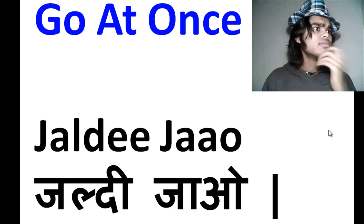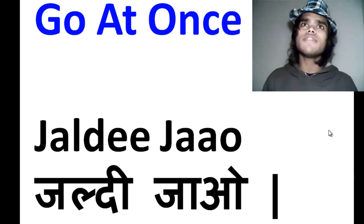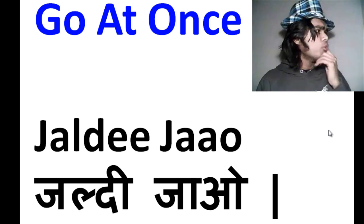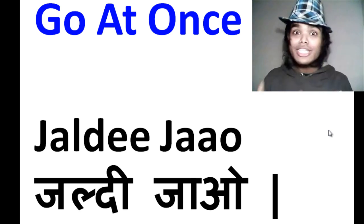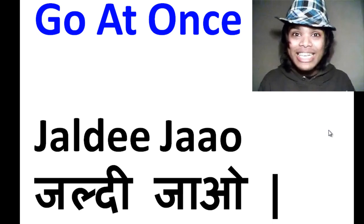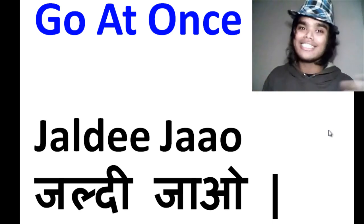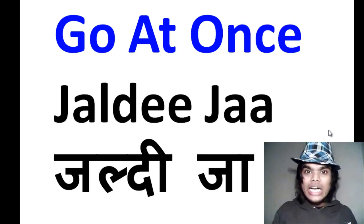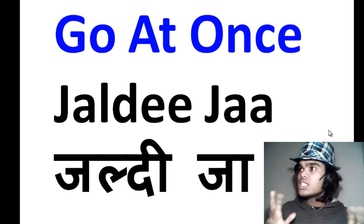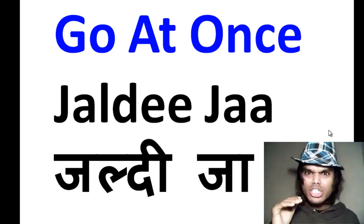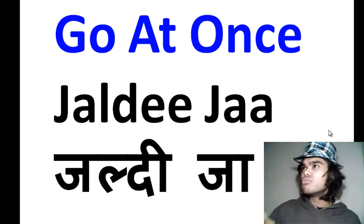The friendly form is 'jaldi jao.' For example: 'office jaldi jao' — hey Kimberly, go to the office fast! Or 'oh Michelle, jaldi jao padhane ke liye' — go study fast! 'Padhane ke liye' means 'for studying.' So 'jaldi jao' is the friendly, no-high-respect level.